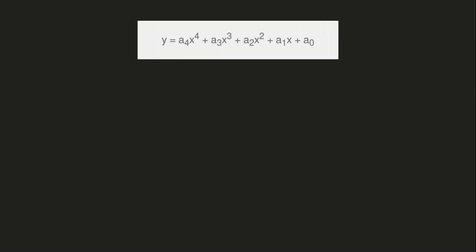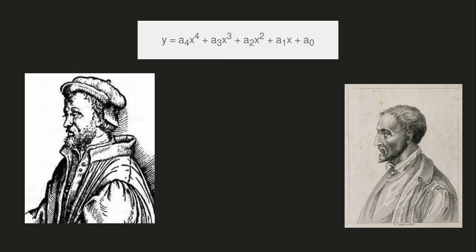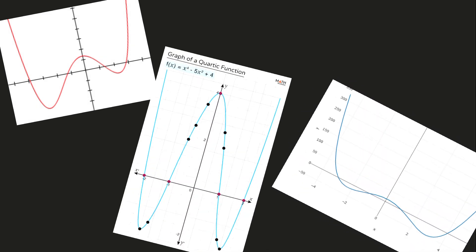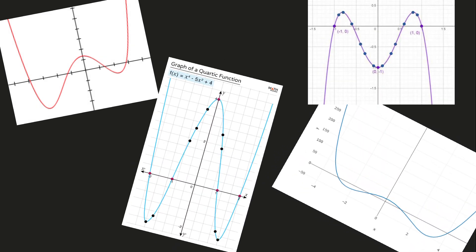A quartic equation is a polynomial equation of degree 4. It has a fascinating history, with mathematicians like Ferrari and Cardano developing methods to solve these equations in the 16th century. Graphically, quartic equations can take various interesting shapes with up to four real roots depending on their coefficients.